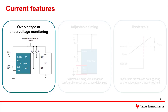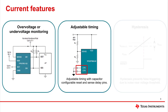Integrated threshold detection allows you to save board space while monitoring voltage rails for over voltage or under voltage conditions. Adjustable timing is provided by configurable sense and reset delays. Configurable sense delays provide glitch immunity from transients to prevent false reset triggers, and configurable reset delays provide a defined output state to ensure system reset and start-up sequencing.